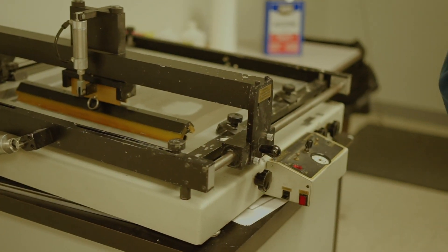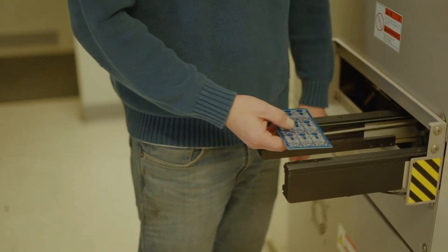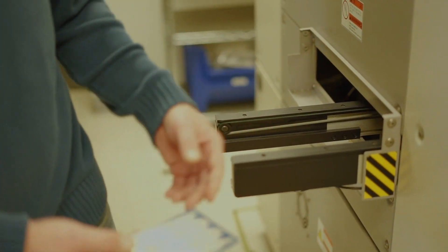Once the solder paste is printed on it, then you put it in the pick-and-place machine. The conveyor carries it in.